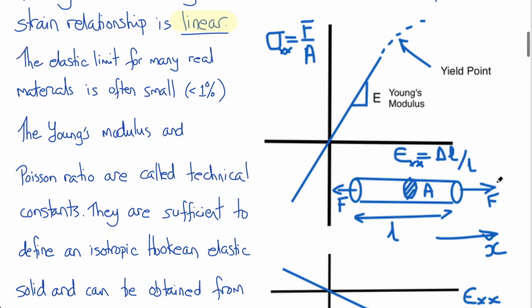Imagine we have a specimen subjected to uniaxial tension or compression with a cross-sectional area A, so that the uniaxial tensile or compressive stress sigma_xx is F over A. And the length is L, and so the strain is delta L divided by L.